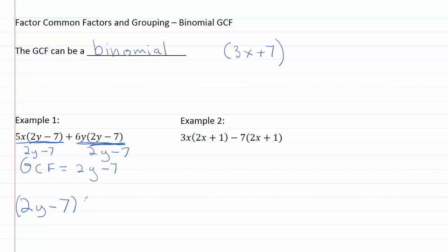On this left hand side, this expression and this expression completely divide out, and we're left with 5x. Over here these two completely divide out, and we're left with plus 6y.